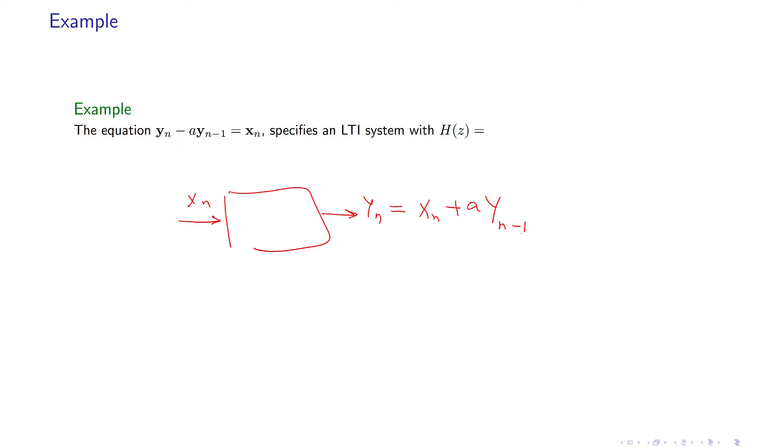So for this filter, if you take Z transform, obviously the Z transform of these random sequences may not work, but if these were deterministic, then these would have been y of z minus a y of z times z minus 1 is equal to x of z.